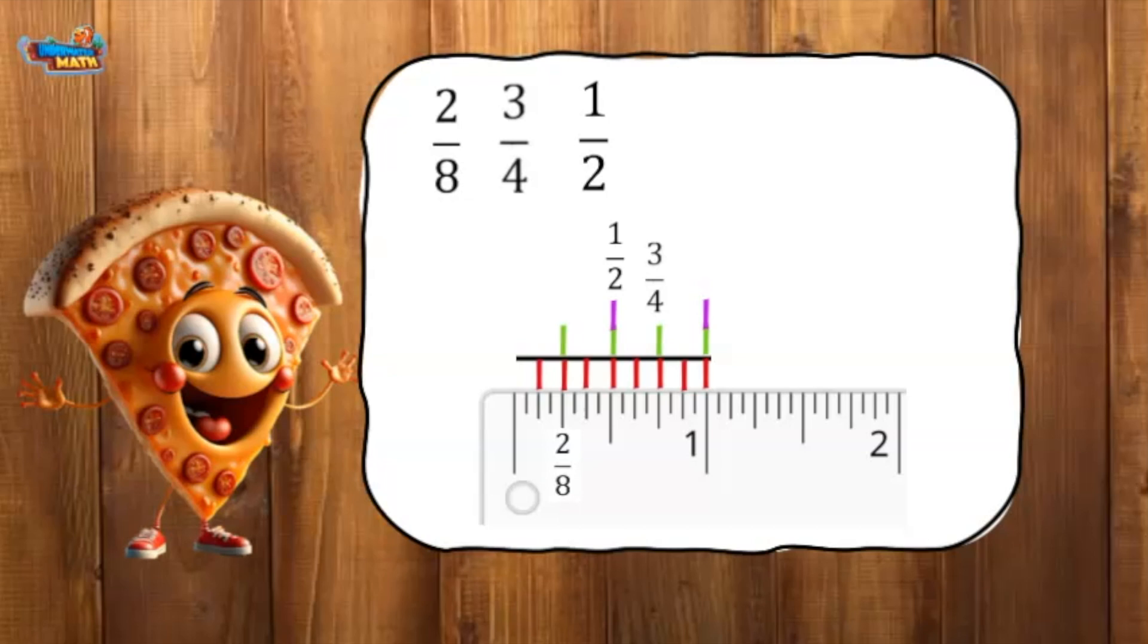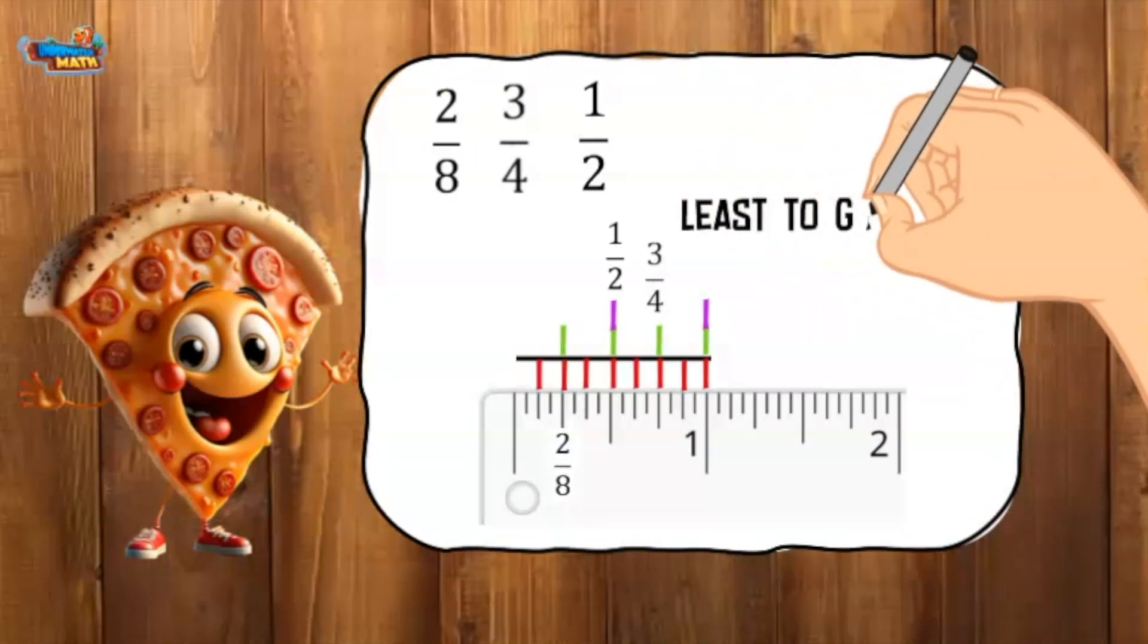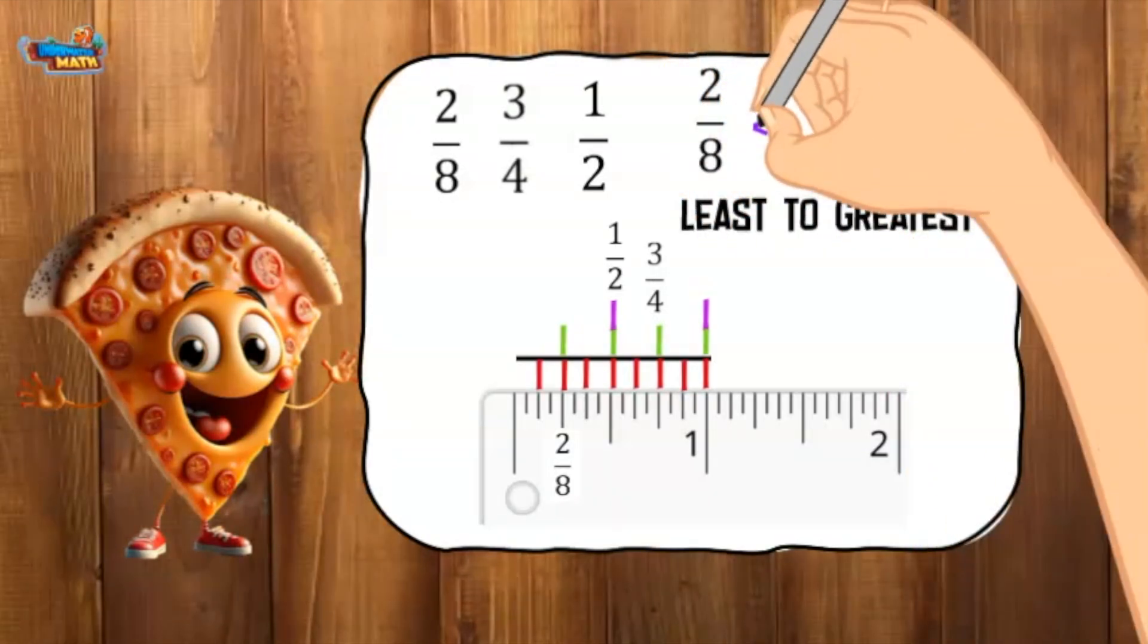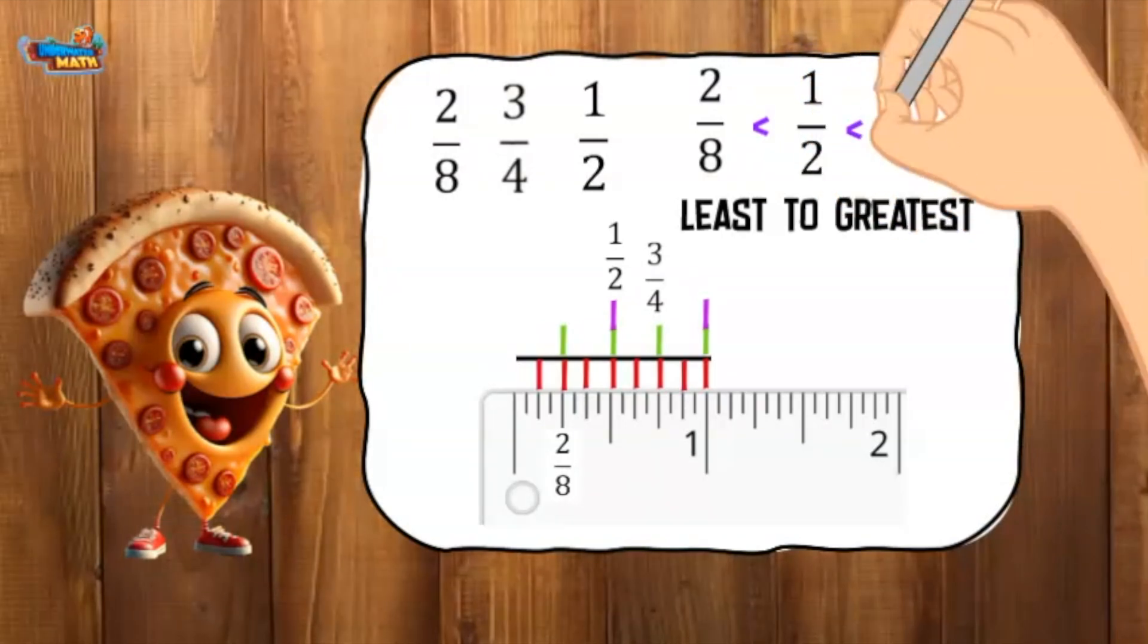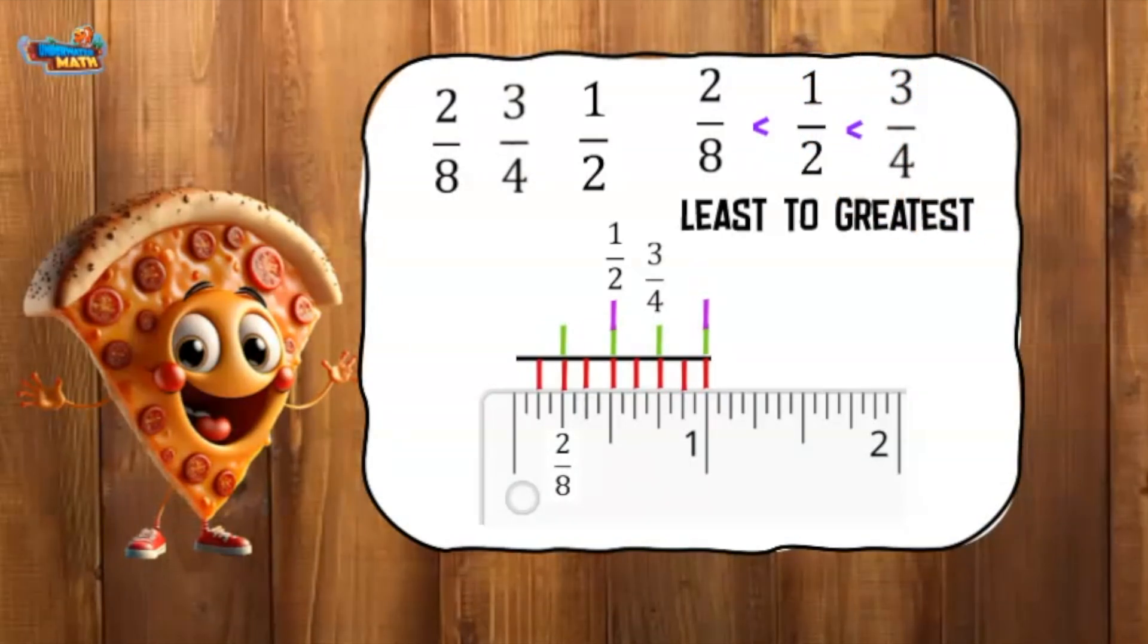Now I will put the fractions in order from least to greatest. The smallest fraction is two eighths, followed by one half and ending with three fourths.